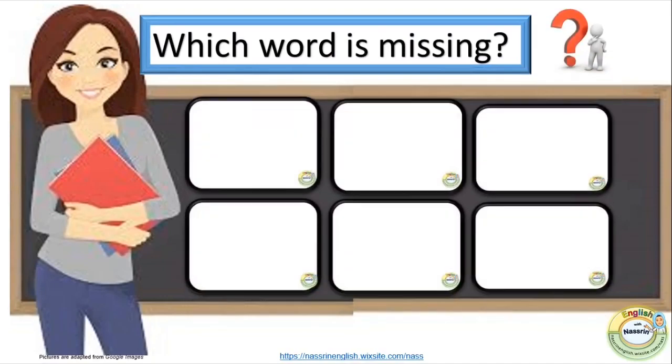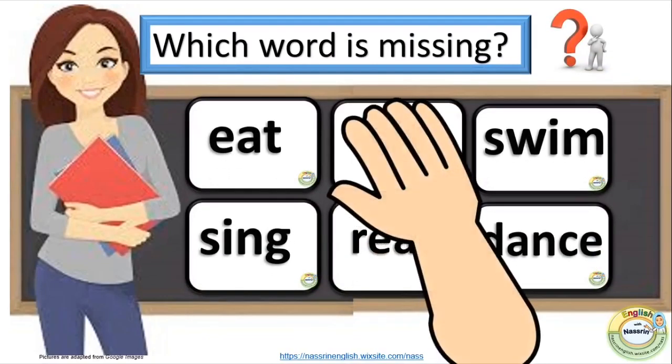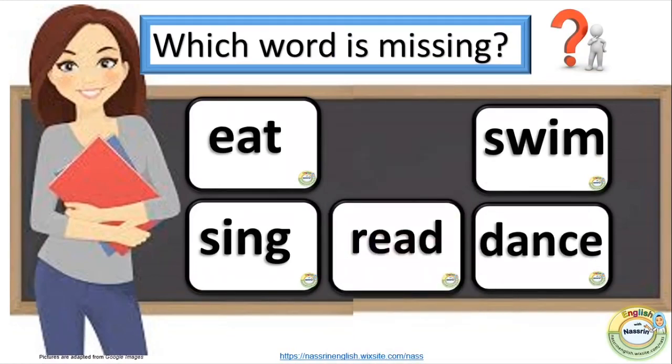The first activity is which word is missing. Select six words from the previous lesson. Either write them on the board or have them as flashcards on the board. Then you ask the learners to recall the missing word.